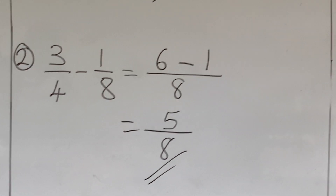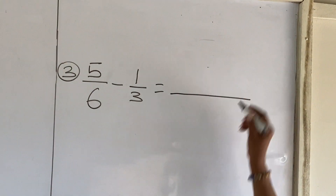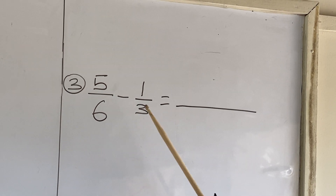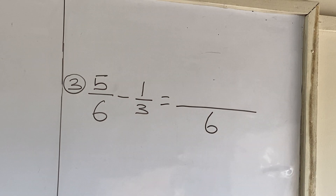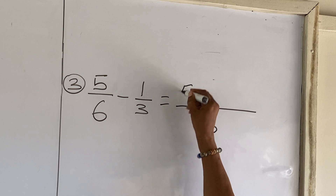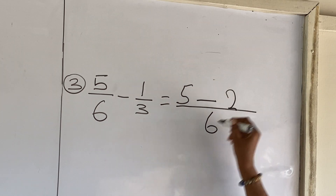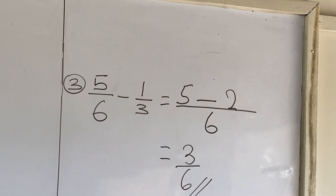Children, I hope you are following me. Let's look at the third example. We have five over six minus one third. Six is the multiple of three, so our denominator is six. Six will go into six one time. One times five is five. Minus — three will go into six two times. Two times one is two. Five minus two is three over six. And this is our answer.